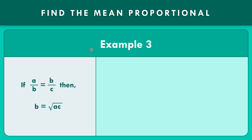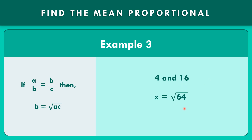Let us find the mean proportional for example number 3: 4 and 64. So x is equal to 4 times 16, that is 64. The square root of 64 is exactly equal to 8. So x equals 8.